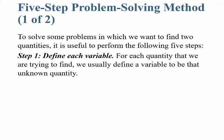Here's a five-step problem-solving method that we're always going to use when we do these word problems. To solve problems in which we want to find out two quantities — that's how you'll know it's going to be a system of equations, two things we're solving for — it's useful to perform the following five steps. Step one: we want to define each variable. For each quantity we're trying to find, we define a variable, and a lot of times in these sections we'll be using the variables x and y.